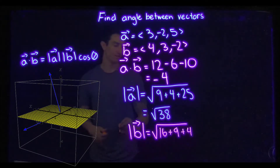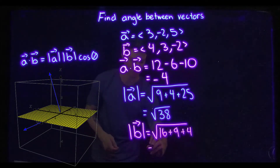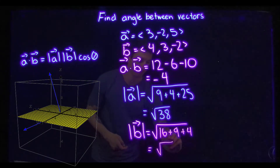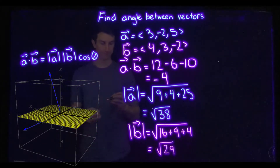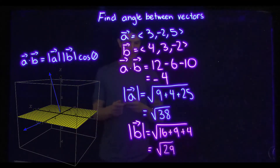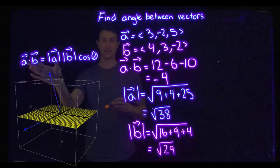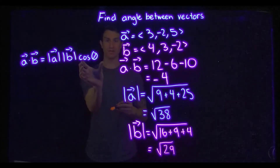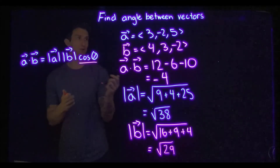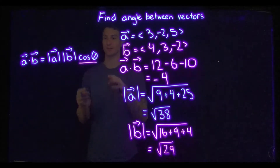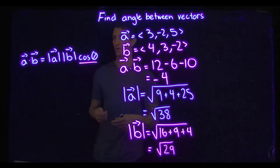We get the square root of 38 for the magnitude of a, and similarly we get the ugly square root of 29 for the magnitude of b. So think about what I've done — I have a dot b and I have the magnitudes. What don't I have? Well, I don't have cosine of theta, which is what I want to solve for the angle between the vectors.